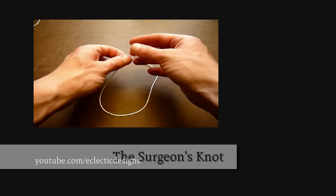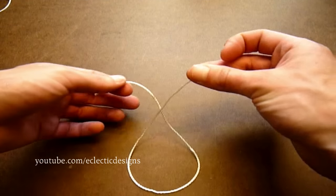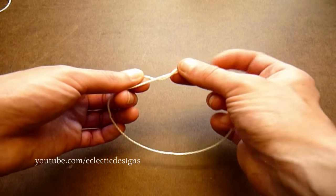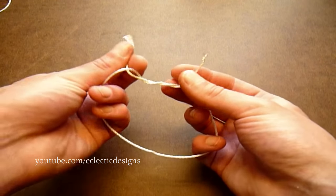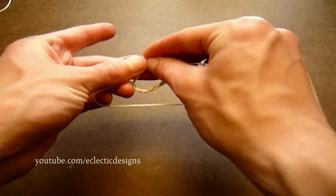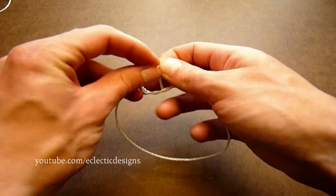The surgeon's knot. Take the left string and bring it over and around the right string two times. Then take the right string over and around the left thread. Pull both ends to tighten.